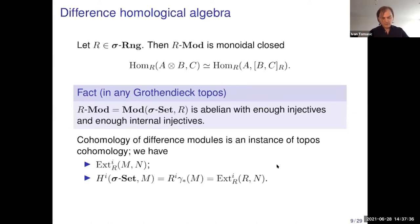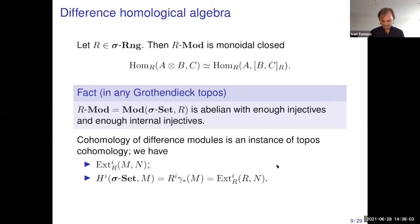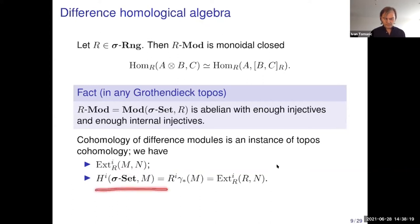Another advantage is that in any ringed Grothendieck topos, the category of modules is automatically abelian with enough injectives and enough internal injectives. So you can immediately start developing homological algebra, and cohomology is simply the topos-theoretic cohomology. We view cohomology of difference modules as an instance of topos cohomology. We can immediately use the machinery of Ext-groups between difference modules, and we have cohomology defined through the higher direct images of the global sections functor — which I will later denote 'fix'.